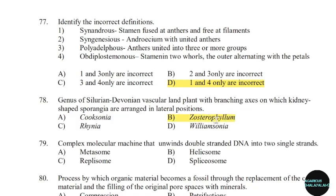79th question: Complex molecular machine that unwinds double-stranded DNA into two single strands. Correct answer: Option C — Replicase.